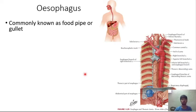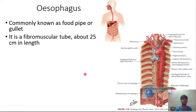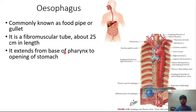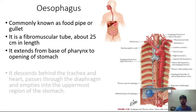The esophagus, commonly known as the foodpipe or gullet, is a fibromuscular tube about 25 centimeters in length. It connects the pharynx with the stomach and extends from the base of the pharynx to the opening of the stomach.